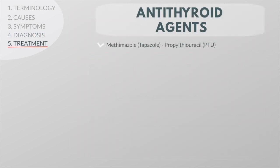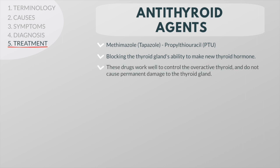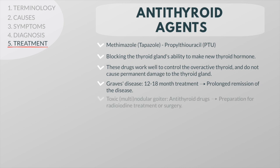Drugs known as anti-thyroid agents can be prescribed to treat hyperthyroidism by blocking the thyroid gland's ability to make new thyroid hormone. These drugs work well to control the overactive thyroid and do not cause permanent damage to the thyroid gland. In about 20-30% of patients with Graves' disease, treatment with these drugs for a period of 12-18 months will result in remission of the disease. For patients with toxic nodular or multinodular goiter, anti-thyroid drugs are sometimes used in preparation for either radioiodine treatment or surgery.